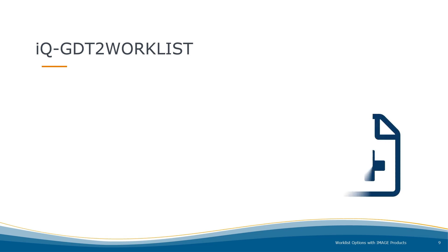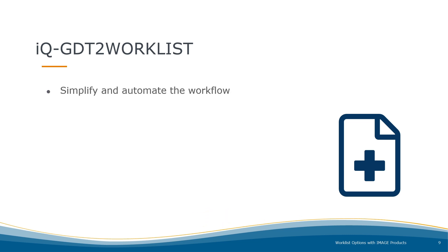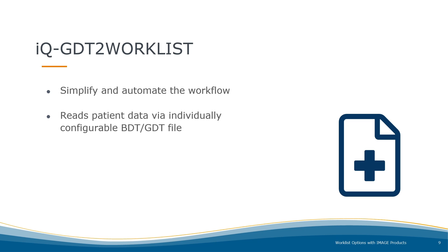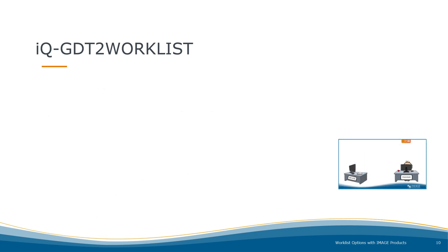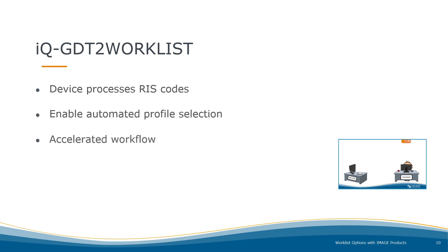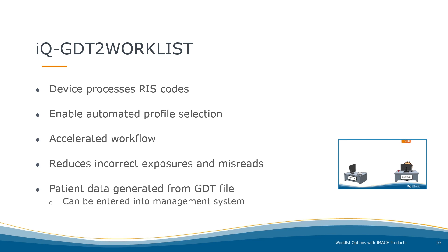Let me introduce you to IQ-GDT2 Worklist. IQ-GDT2 Worklist automatically reads patient data from practice management systems via individually configurable BDT or GDT files. It then prompts the user for the study data. By selecting the modality, device, and body part individually, RIS codes from any manufacturer can be added to a DICOM Worklist to work on the device with the correct patient data. Most devices can process RIS codes, enabling automated profile selection. Using RIS codes accelerates the workflow and reduces incorrect exposures or misreads. In addition, the patient data is generated in the form of a GDT export file, which can be entered back into the practice management system.